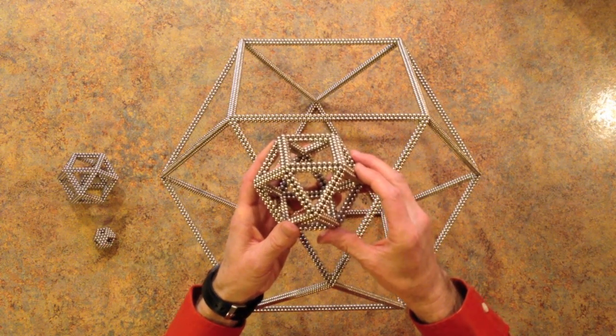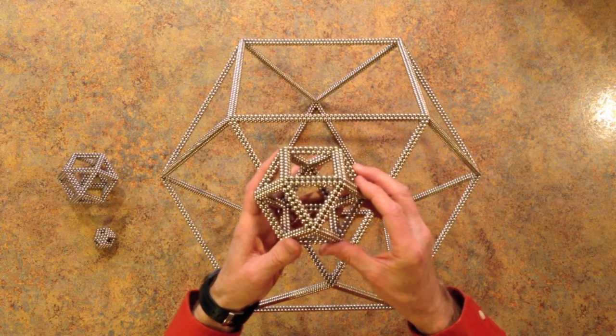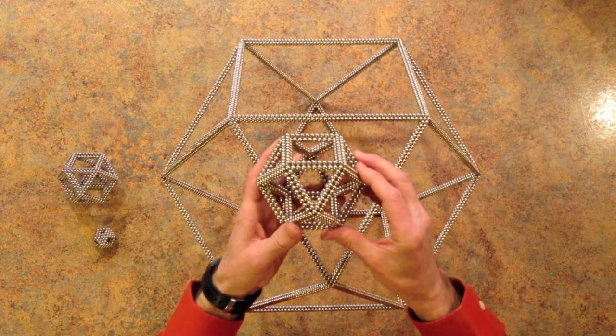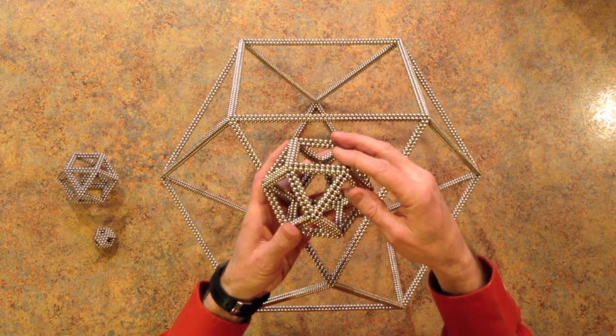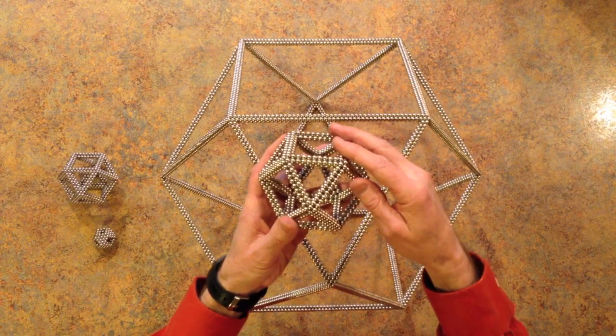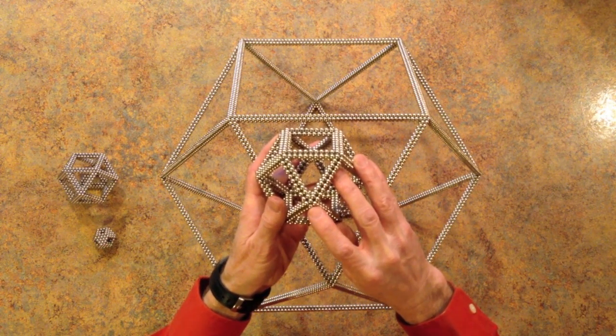The cuboctahedron has six square faces. It also has eight triangular faces like an octahedron.